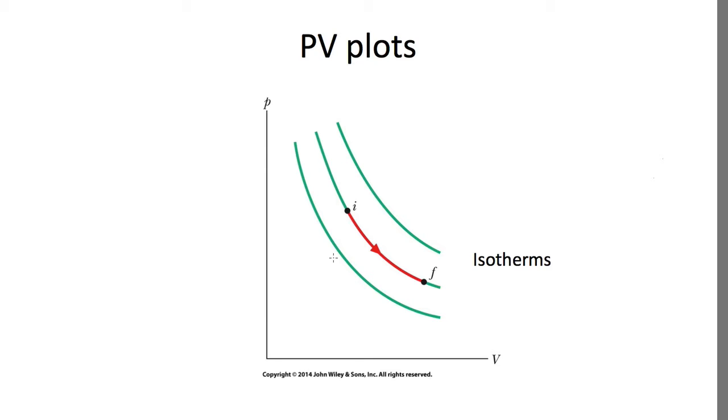And so let's consider these lines on a PV plot. These are actually what's known as isotherms. So isotherms are constant temperature lines.